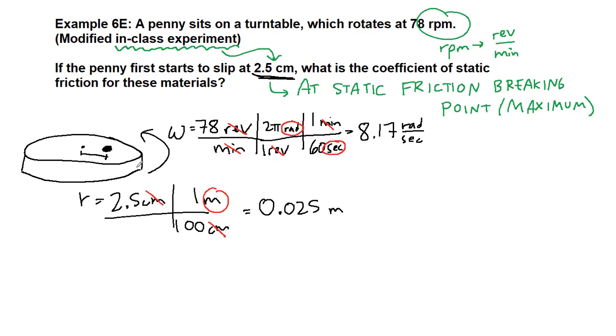As with the problems we have seen all throughout this section of chapter 6, we do want to draw a free body diagram of the penny right at this spot. We have for the penny gravity straight down, the normal force straight up, and we have friction.